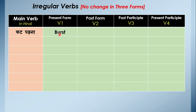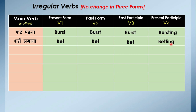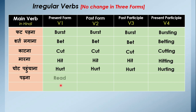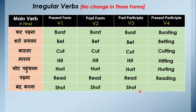Kuch irregular verbs mein teeno forms same hoti hain — koi change nahi aata. Jaise: burst — burst, burst, bursting. Sharat lagana — bet, bet, bet, betting. Katna — cut, cut, cut, cutting. Marna — hit, hit, hit, hitting. Chot pahunchana — hurt, hurt, hurt, hurting. Padhna — read, read, read, reading (note: spelling same, lekin second aur third form mein pronounce karte hain 'red'). Band karna — shut, shut, shut, shutting.